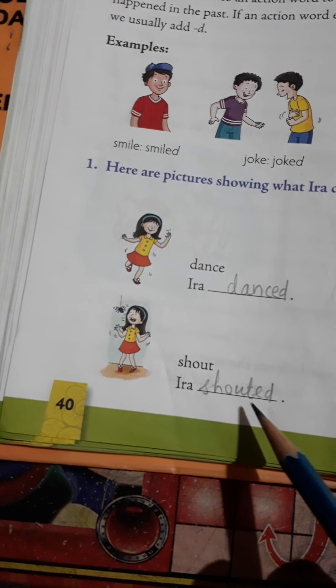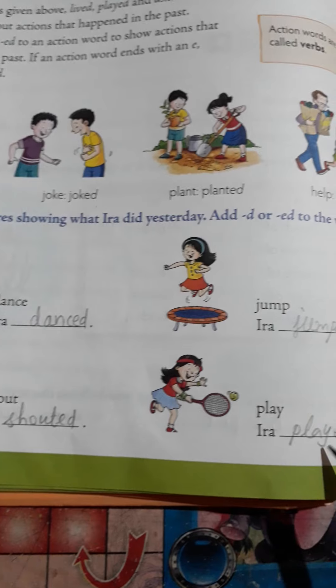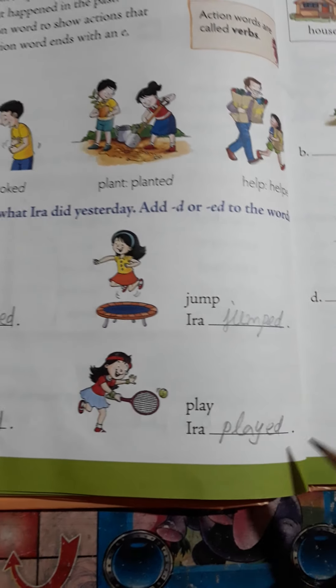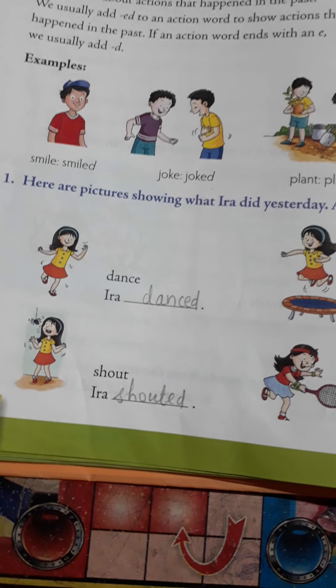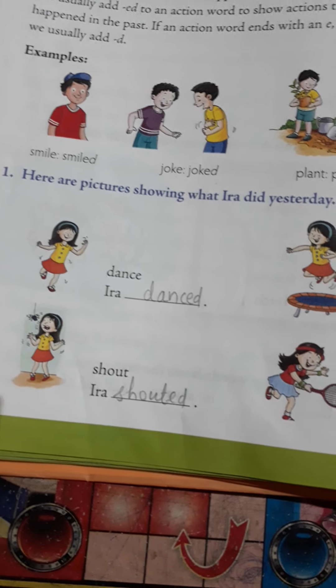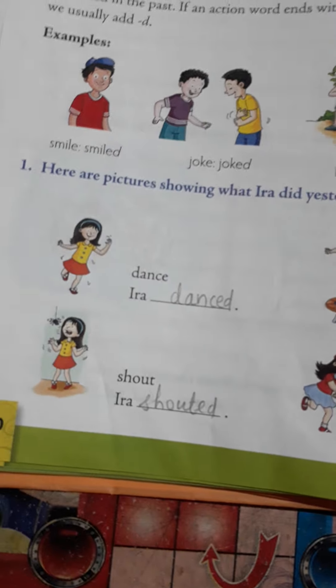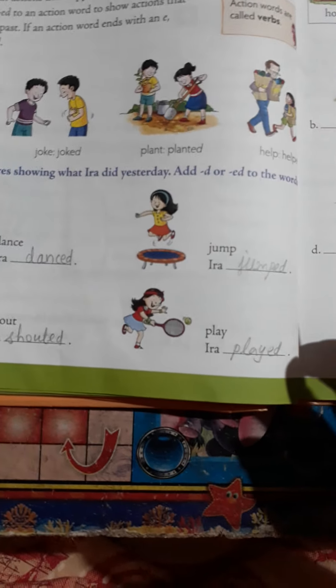Sometimes we have to add D or E-D in the past tense form. This you have to write in your book. In another video I will also send the question and answer, that you have to write in your literature copy. Okay children, thank you.